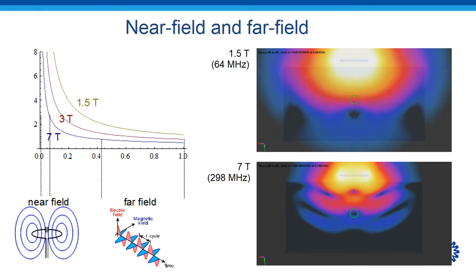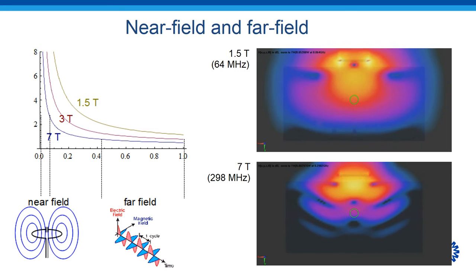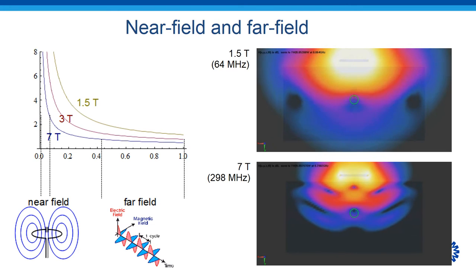This graph shows that for higher field strength or higher frequencies, the wavelength gets smaller, but also the near field gets smaller, which is beautifully depicted by the two movies on the right, where you can see a region of interest at 10 cm depth for a loop coil emitting B1 field into a tissue-like phantom. At 1.5T, the region of interest is very much in the near field.